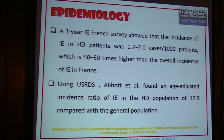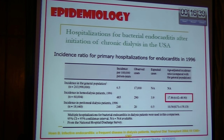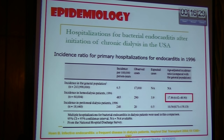In the US data system, it has been found that the adjusted incidence ratio of infective endocarditis in hemodialysis patients is almost 18 times compared to the general population. The data also shows that the incidence ratio for primary hospitalization was more than 18 times among hemodialysis or chronic kidney disease patients.